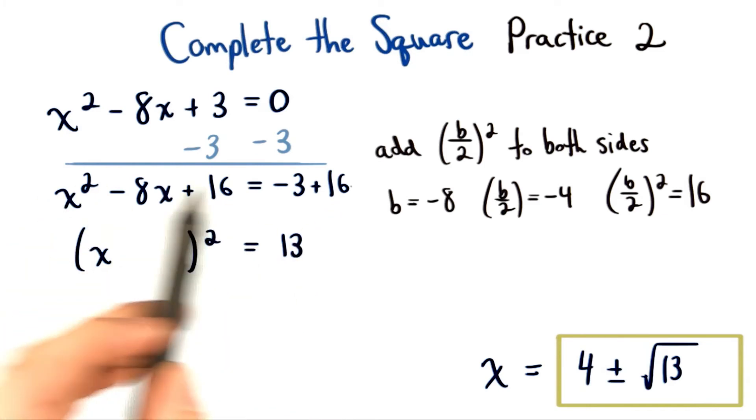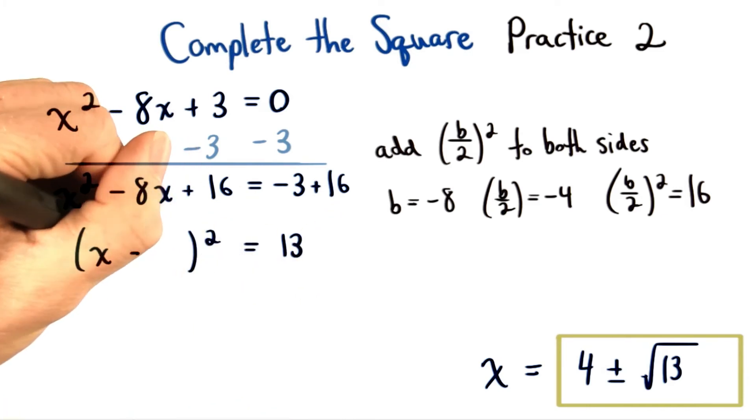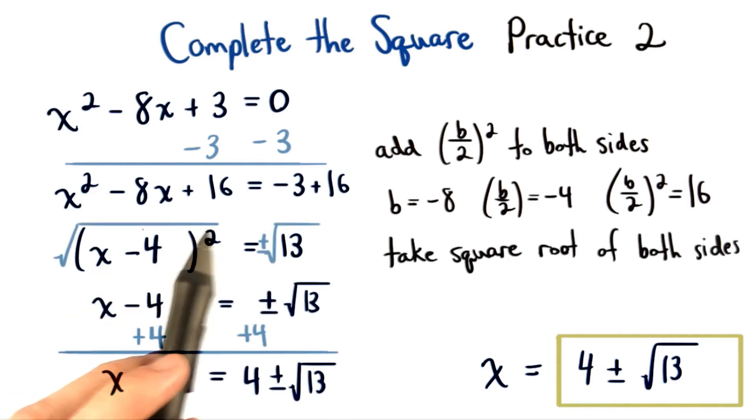Then we rewrite the left hand side of our equation using x minus 4 squared. Now that we have a perfect square, we take the square root of both sides to get x minus 4 is equal to plus or minus root 13.